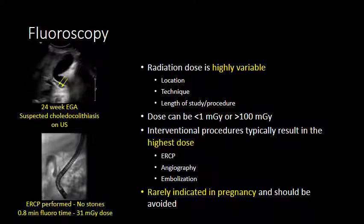Fluoroscopy requires ionizing radiation for image generation, and the radiation dose is highly variable depending on the region being imaged, how much radiation is needed to penetrate the patient, and how long the procedure takes. Doses can range from lower than 1 mGy to greater than 100 mGy. Interventional procedures requiring fluoroscopy typically have the highest dose — examples include ERCP for the bile or pancreatic ducts, angiography, and embolization procedures. Fluoroscopy is rarely indicated in pregnancy and should be avoided if possible.